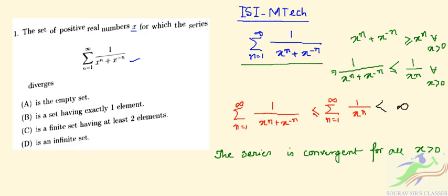Since we're asked for the set of positive real numbers where the series diverges, and the series converges for all x > 0, the correct answer is option A: the empty set.